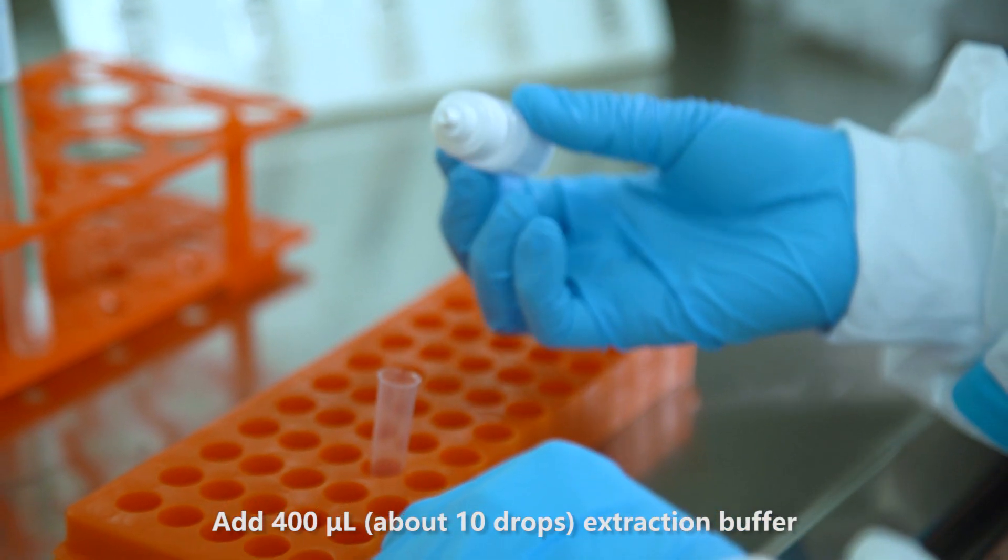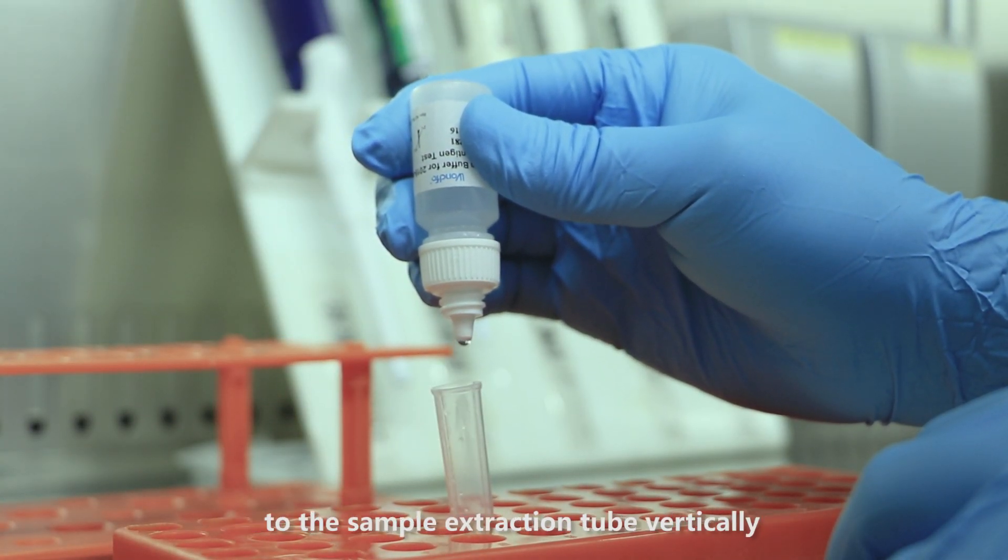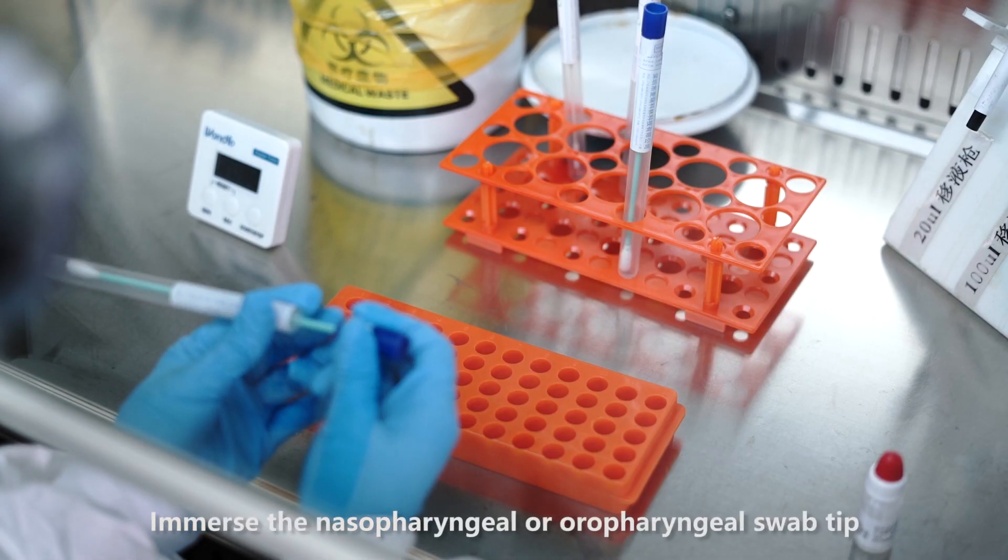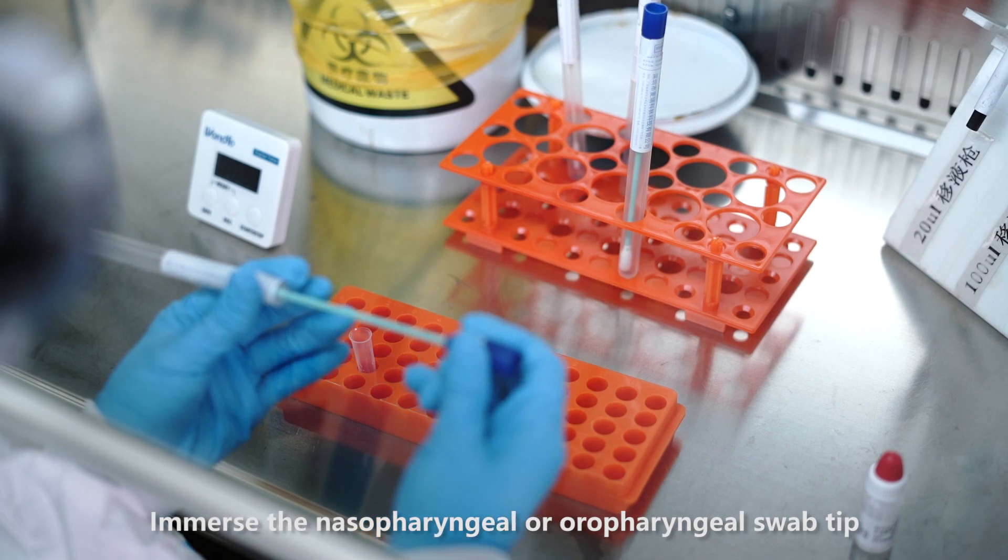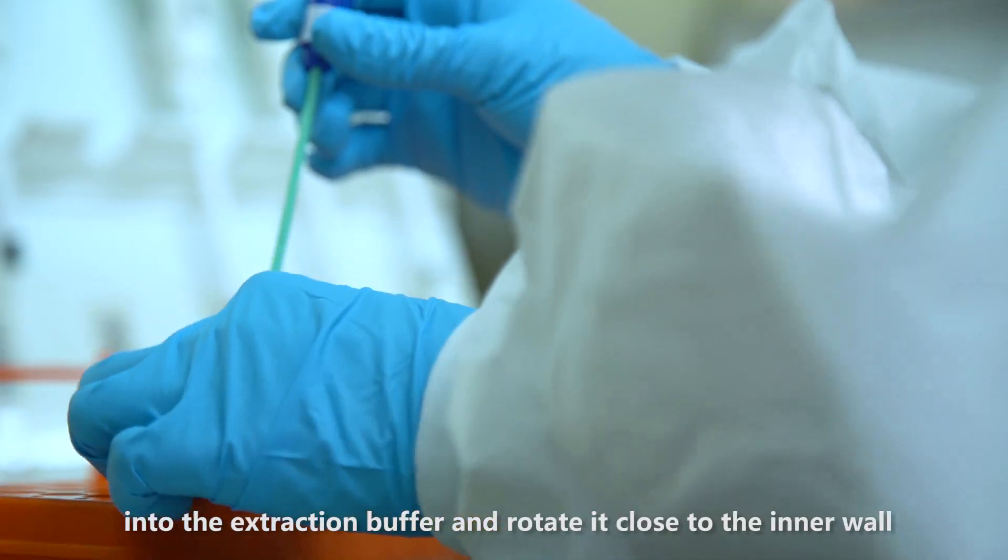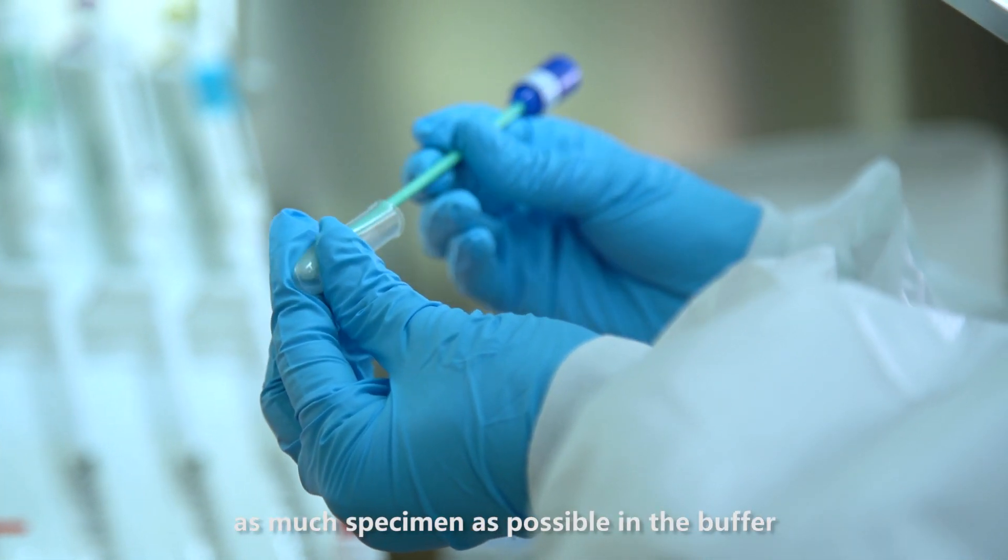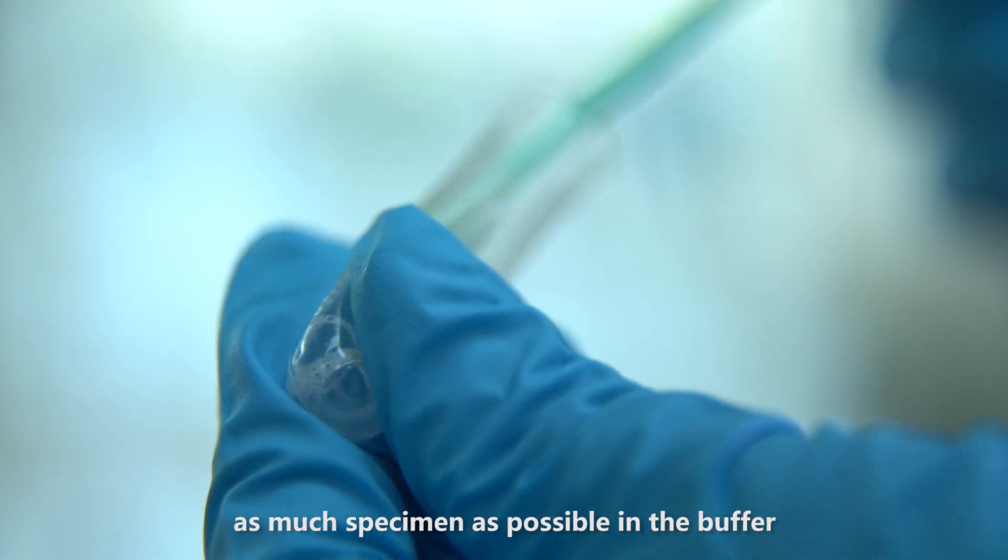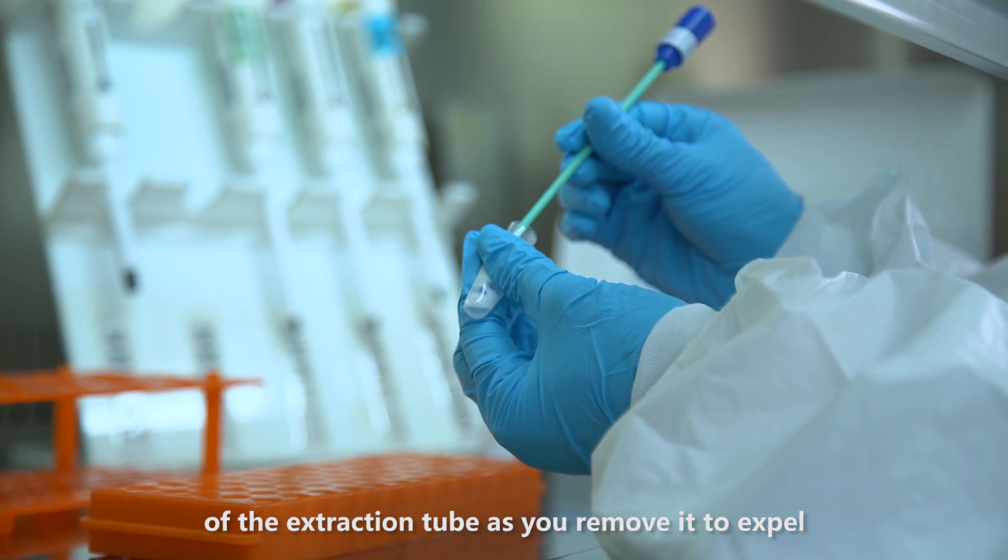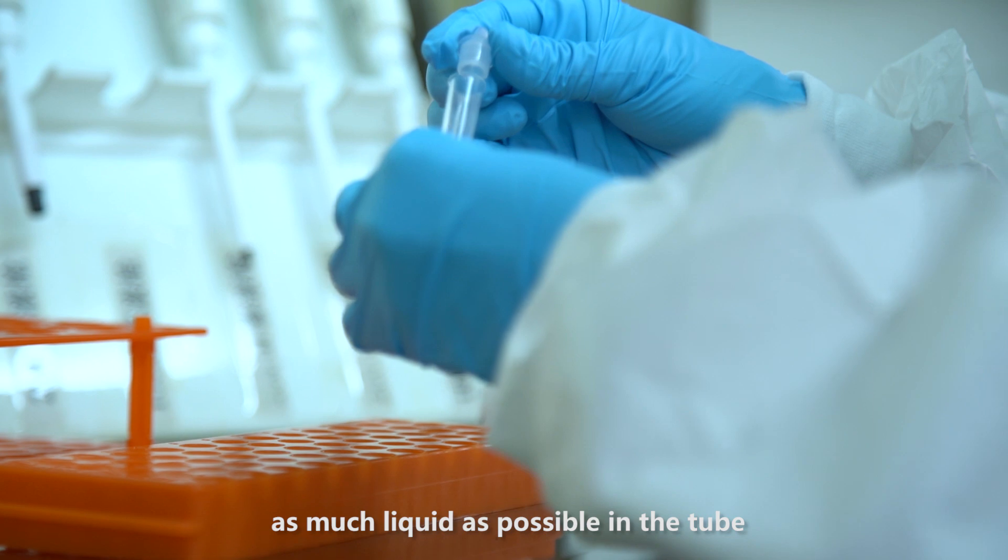Add 400 microliters, about 10 drops, of extraction buffer to the sample extraction tube vertically. Immerse the nasopharyngeal or oral pharyngeal swab tip into the extraction buffer and rotate it close to the inner wall of the tube for about 10 times to dissolve as much specimen as possible. Squeeze the swab head against the inner wall of the extraction tube as you remove it to expel as much liquid as possible in the tube.